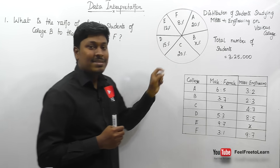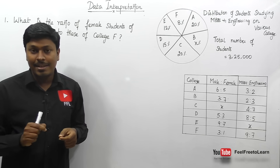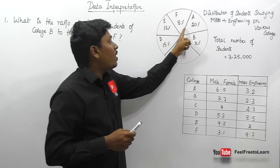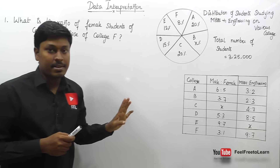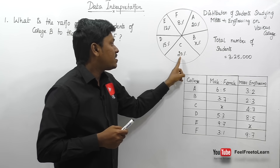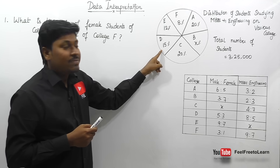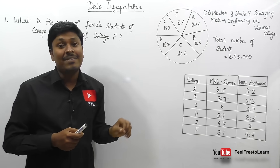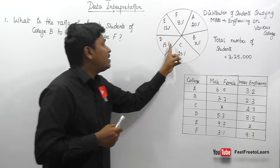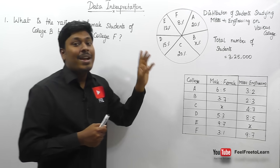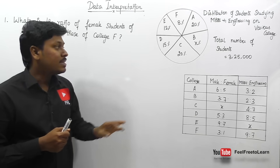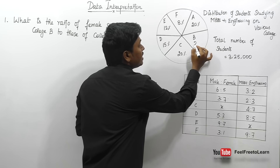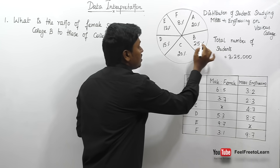Before solving, remember that a complete pie chart is always 360 degrees, which equals 100%. Adding the known values: 20 + 20 = 40, plus 15 = 55, plus 8 = 63, plus 12 = 75. Since the total must be 100%, 100 minus 75 gives us 25%. So the value of x for college B is 25%.